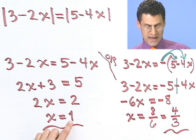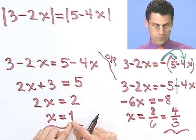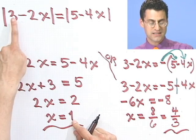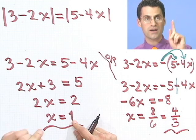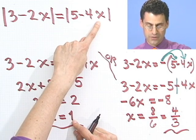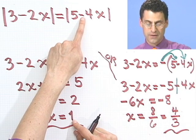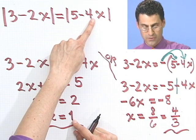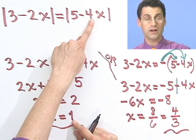You should go back and check if you want. For example, let's check x equals 1. If I put 1 in here, I see 3 minus 2, that's 1. Absolute value of 1 is 1. If I put 1 in here, I see 5 minus 4 times 1, and 5 minus 4 is 1. So 1 equals 1.